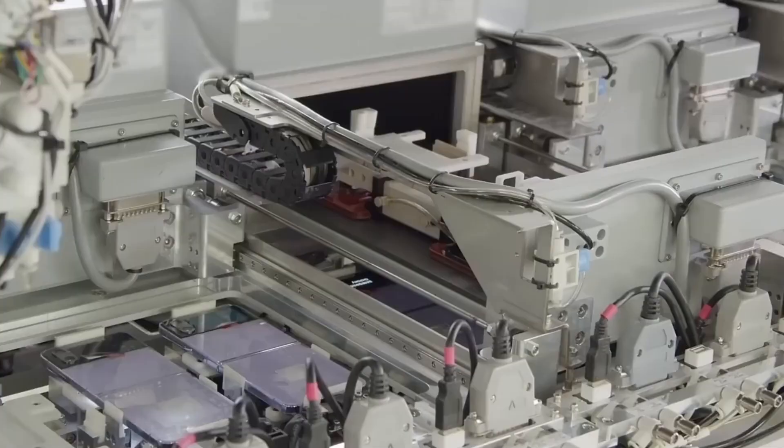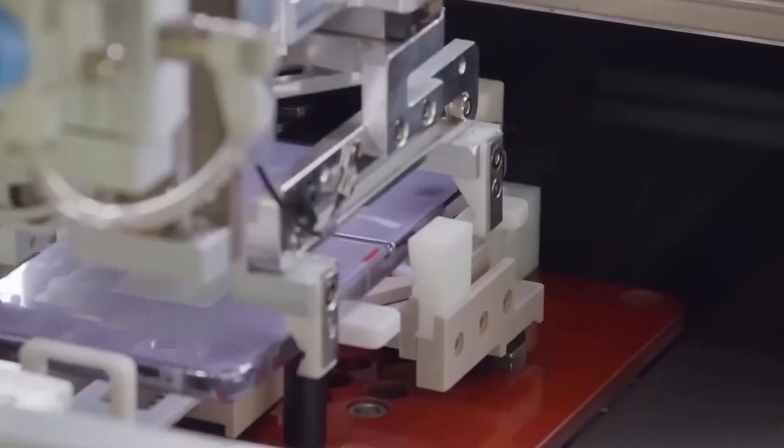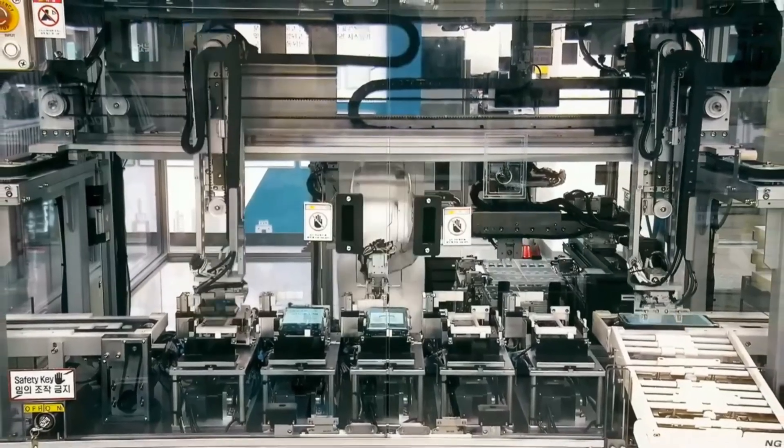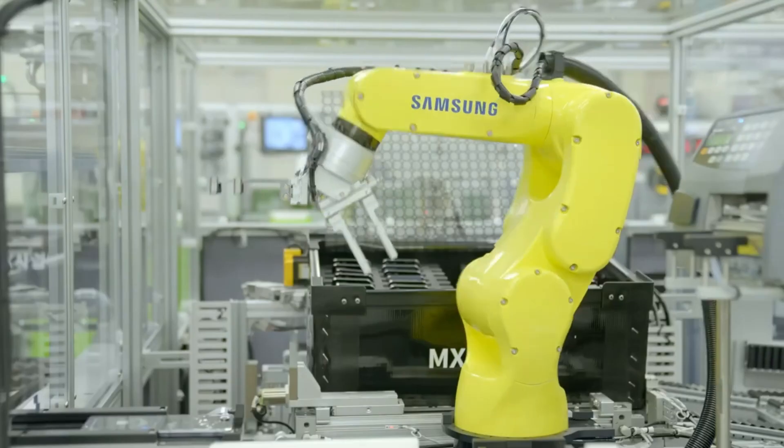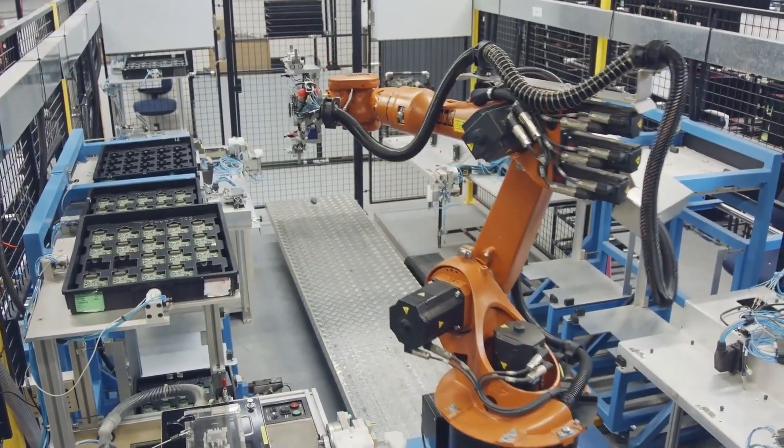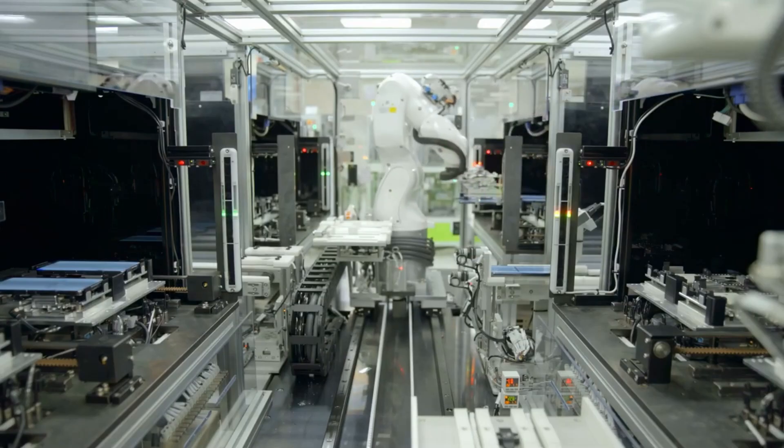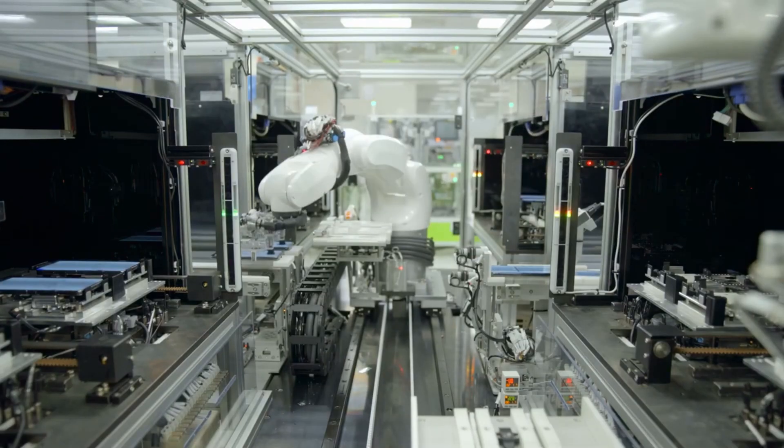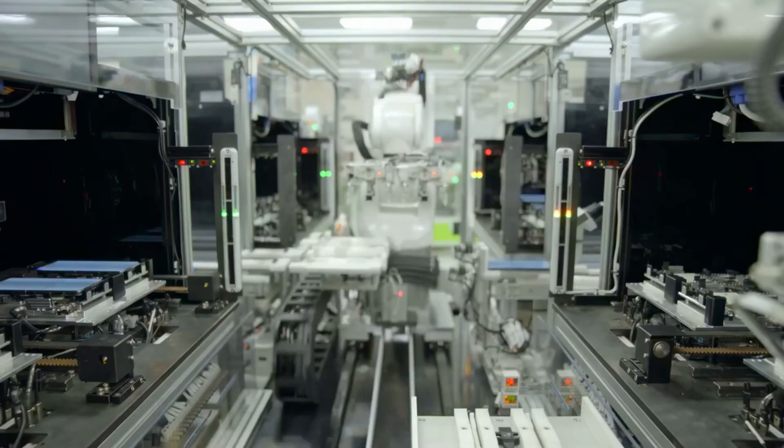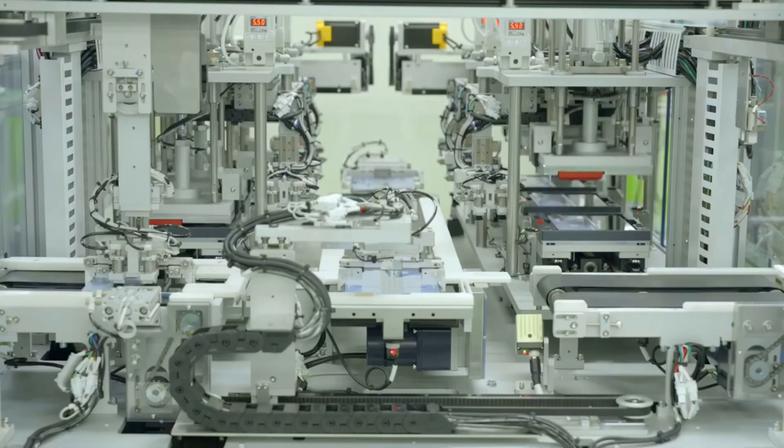These aren't your average factory robots, either. Samsung has deployed autonomous mobile robots that can carry 1.5 tons of materials. That's like a robot casually lifting a small car and walking around the factory with it. These AMRs, autonomous mobile robots, have completely replaced forklifts, making the entire operation safer and 300% more efficient.